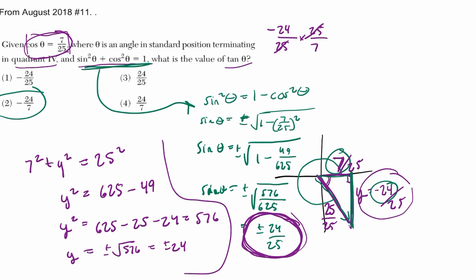Now, I like this approach better where you draw a triangle, but you can also use the Pythagorean identity, which is what they gave us right here. All right. I hope that helped.